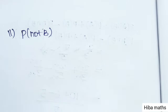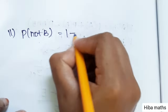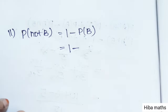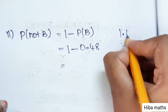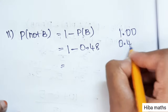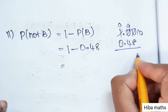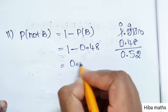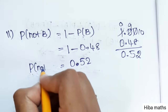Second part: P(not B) = 1 minus P(B), that is 1 minus 0.48. So the answer is 0.52. This is P(not B).